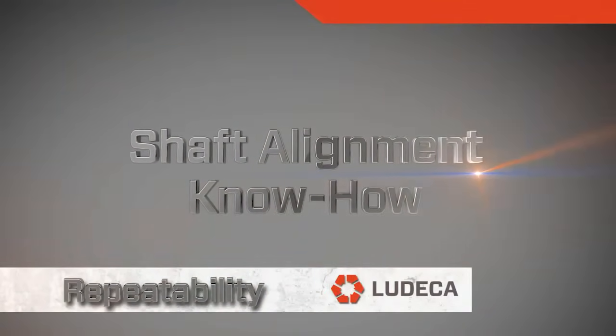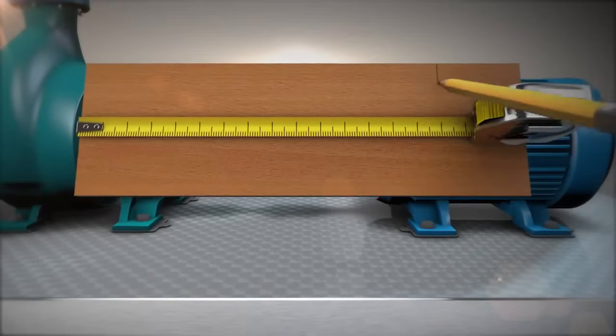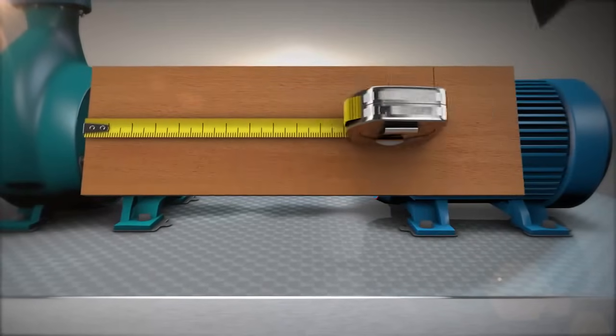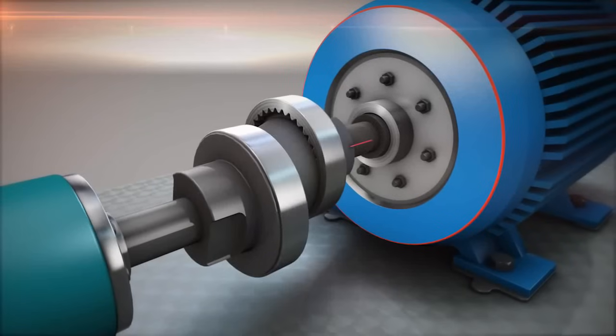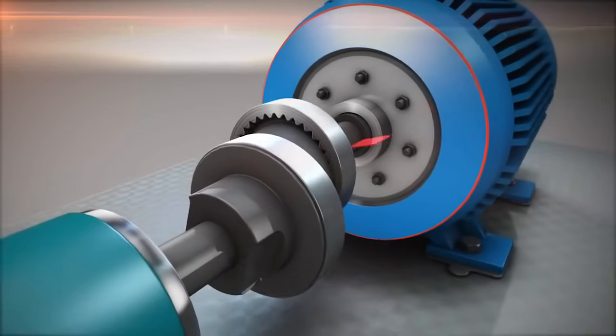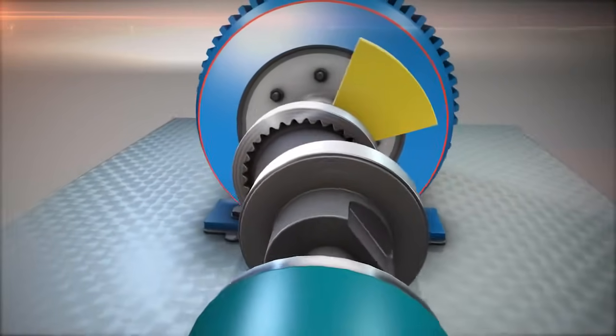Shaft alignment know-how: Repeatability. We have all heard the old carpenters saying, measure twice, cut once. When we start a shaft alignment measurement, we take two sets of readings with the same start and stop positions, following the natural rotation of the machine.